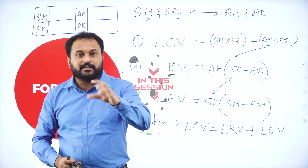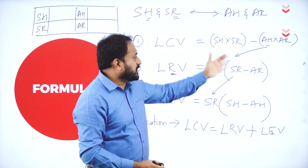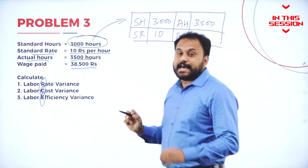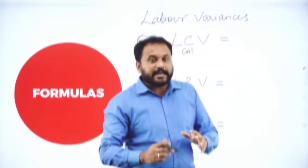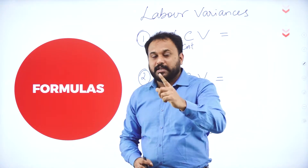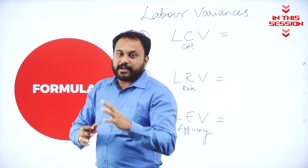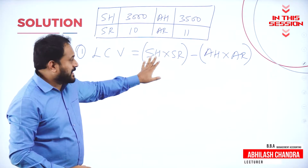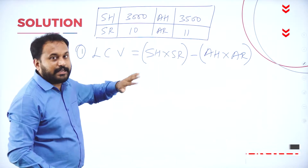If you find out four things in the question, you can solve the problem using the formulas. Don't write 38,500 in the actual rate because here they have given the total. In labor also, we have standard, which is set by the company, and actual, which is performed by the people employed in that company. Don't write SR into SS — though you get the right answer, you will not be able to continue with the next formulas.